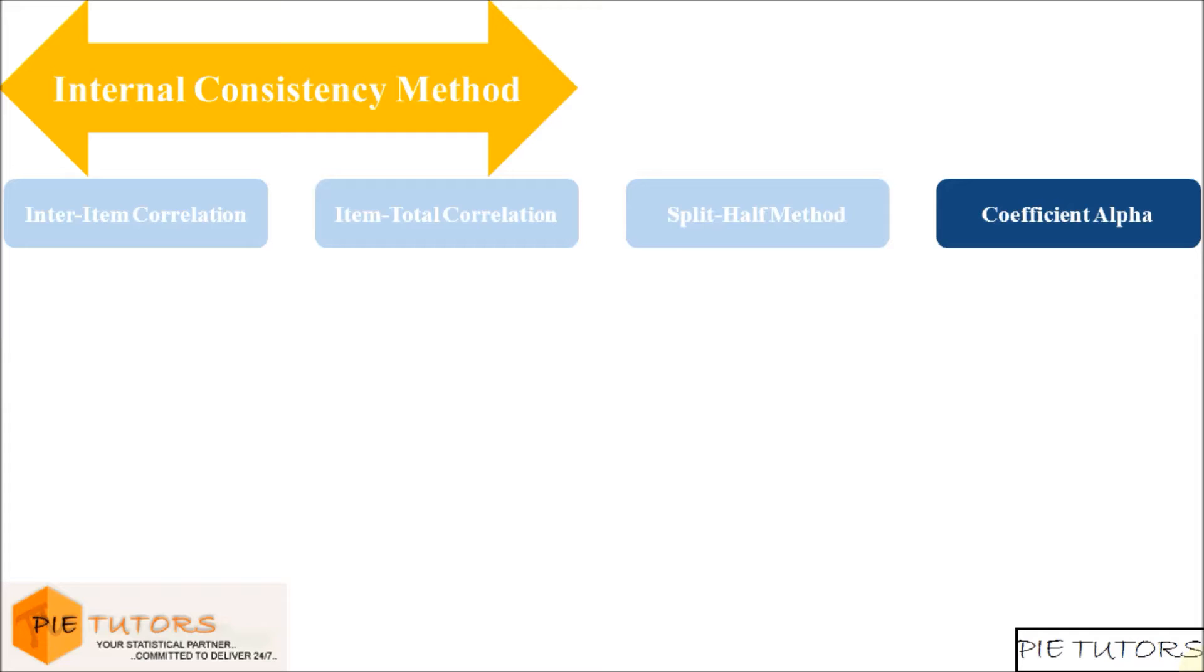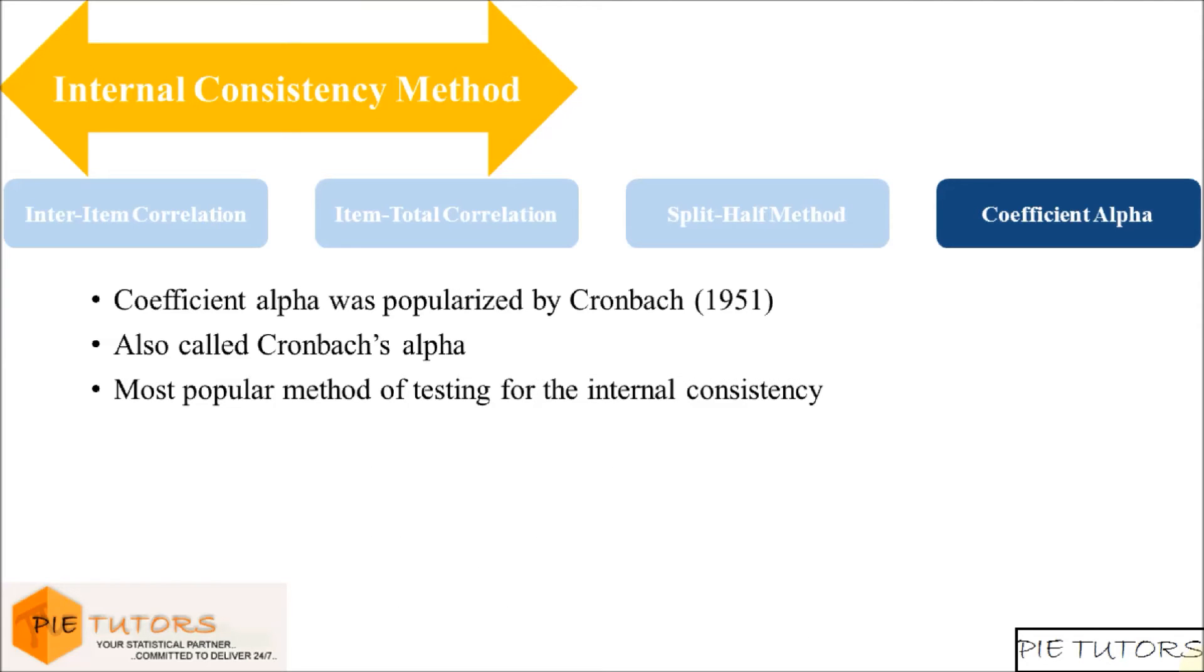Coefficient Alpha. Coefficient Alpha was popularized by Cronbach in 1951 and it is often referred to as Cronbach's Alpha. It is the most popular method of testing for the internal consistency of a measure. So if we have a measure with K items then Cronbach's Alpha is defined as...